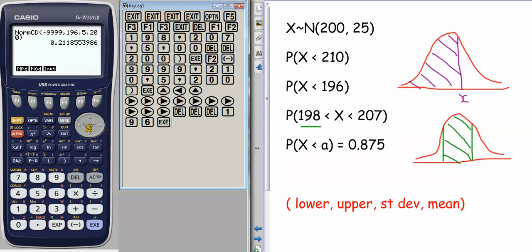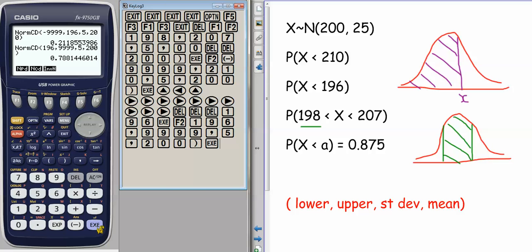If we wanted to do greater than, say I want to do the probability of X being greater than 196, then we do the same thing, except our lower bound is now 196. And our upper bound, we just take to be something big and positive, so 9999. And again, 5 and 200.